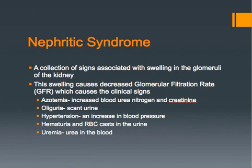The decreased rate of filtration increases byproducts that are normally filtered and excreted, causing an increase in blood urea nitrogen and creatinine, and resulting in a lower volume of urine. The increased amount of fluid and byproduct remaining in the body causes an increase in blood pressure. Additionally, baroreceptors in the kidneys sense the decreased GFR and cause the body to increase blood pressure to try to increase GFR.